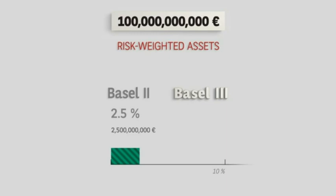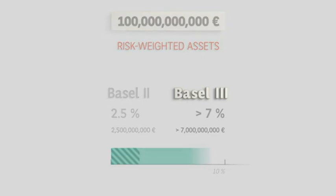Basel III is using the same concepts, but imposes not 2.5%, but 7% or even more, depending on the nature of the activities and the type of bank. This was the first axis, leading to a considerable increase in the required capital for banks.